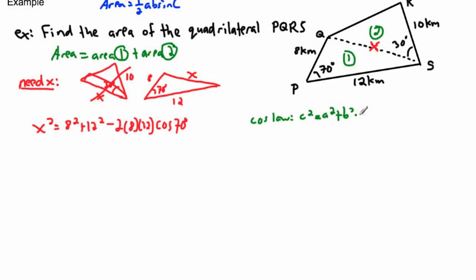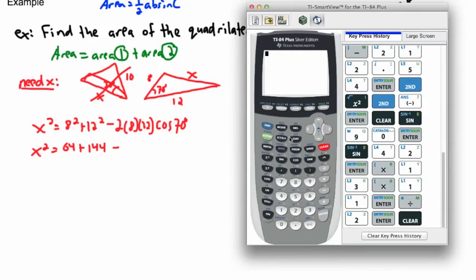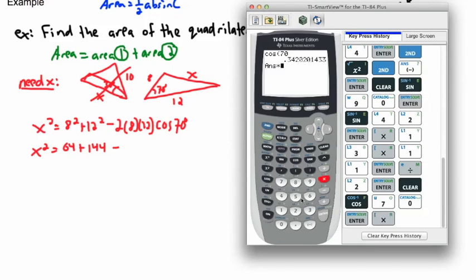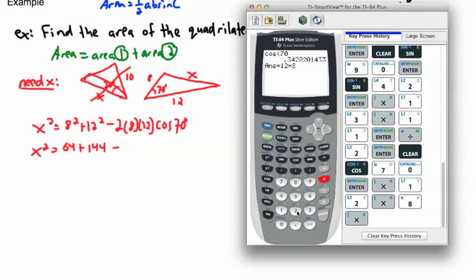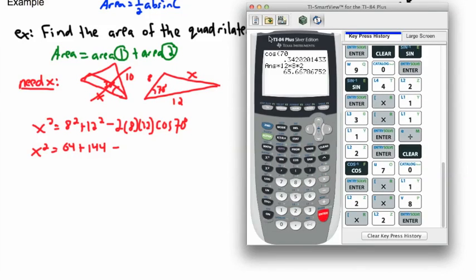The cosine law normally goes: c² = a² + b² − 2ab·cos C. Don't get too caught up on the labels — the key idea is that some side squared equals the sum of the other two sides squared minus two times those sides times the cosine of the known angle. In our case: x² = 8² + 12² − 2(8)(12)·cos 70°.